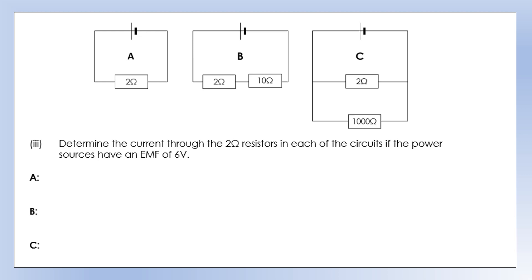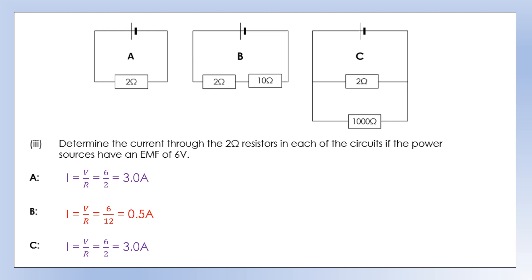Now determine the current through the 2 ohm resistors in each circuit, given the power sources have an EMF of 6 volts. Circuit A: potential difference across the resistor is 6 V, resistance is 2 ohms, giving a current of 3 amps. Circuit B: total potential difference of 6 V across the series combination, divided by 12 ohms total resistance, gives 0.5 amps. Circuit C: the potential difference across the 2 ohm resistor is still 6 V, so the current is still 3 amps — adding the 1,000 ohm resistor in parallel had no effect on the current through the 2 ohm, just as adding bulbs in parallel doesn't affect individual bulb brightness.